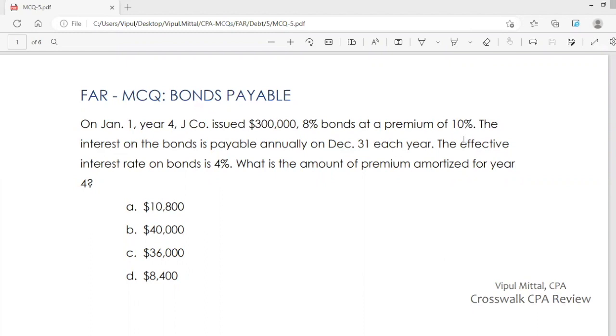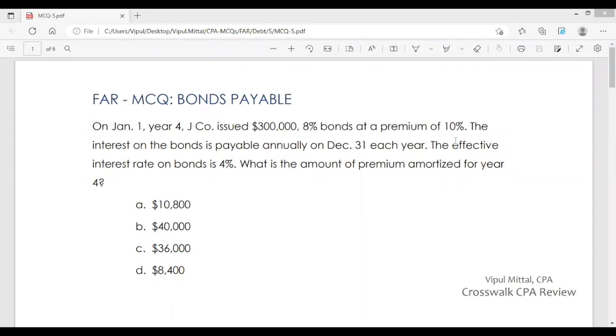On January 1, year 4, J Company issued $300,000, 8% bonds at a premium of 10%. The interest on the bonds is payable annually on December 31st each year.